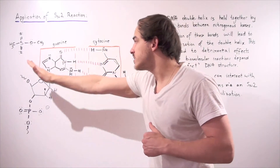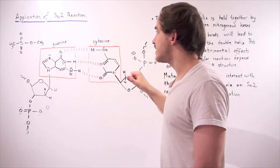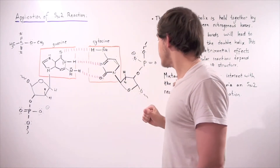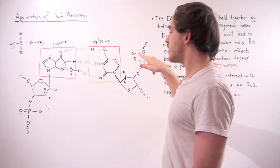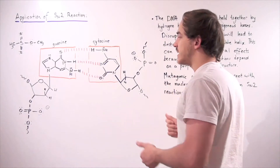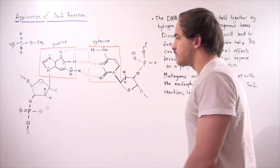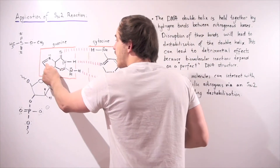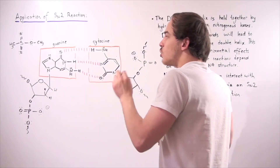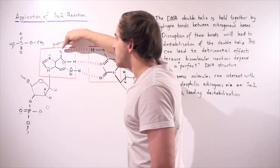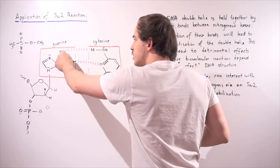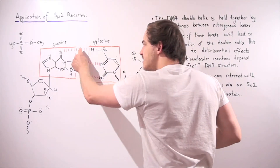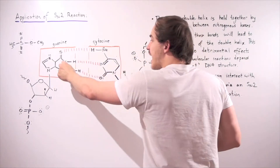Let's look at a cross-sectional example where our two bases are guanine and cytosine. There are three different H-bonds between these two bases, along with sugar groups and phosphate groups. The relatively electronegative oxygen has a partial negative charge that attracts the partially positive H on the opposing base, creating a hydrogen bond.